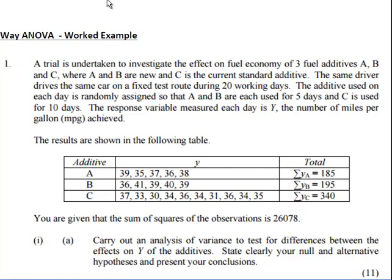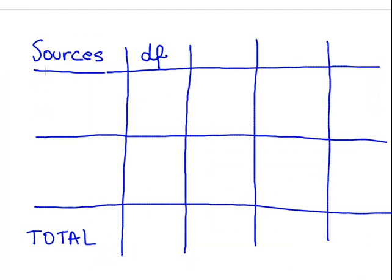A trial is undertaken to investigate the effect on fuel economy of three fuel additives - that is important information to start with, the number of subgroups in our sample. So I am going to go straight to my notepad and write out my table, and just state the number of groups is k equals 3.